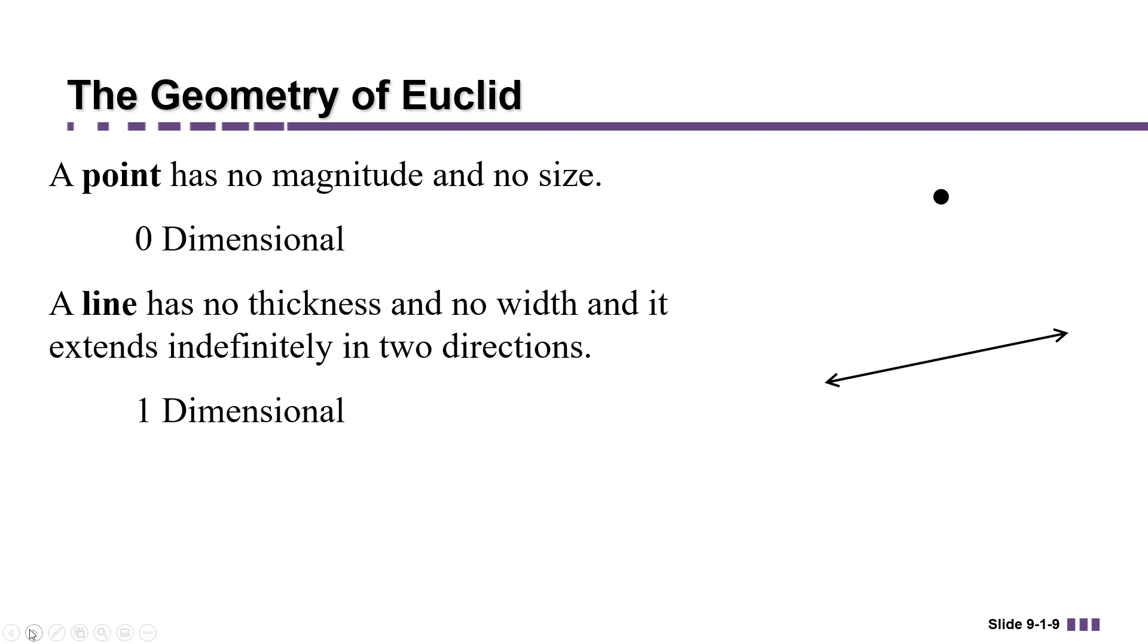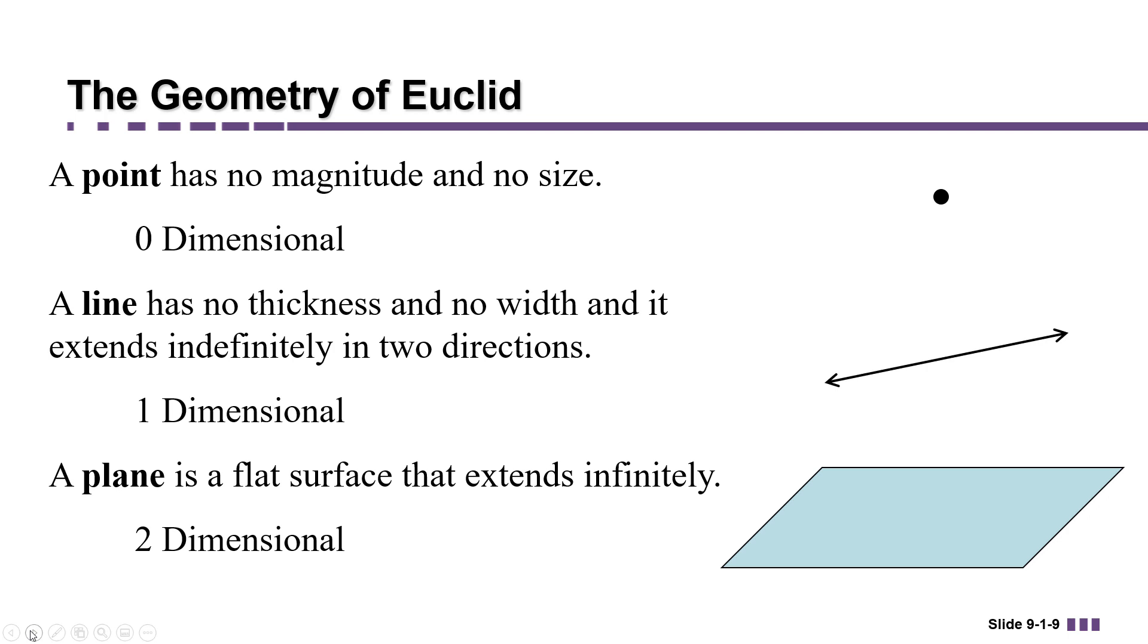A plane is a flat surface, like a tabletop, that extends infinitely in all directions. We usually draw it to look angled to imply that it continues forever. This is a two-dimensional object. Unlike a tabletop, it doesn't have any thickness.